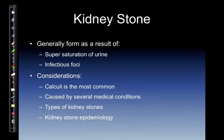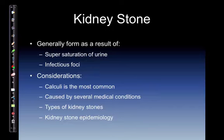Considerations: calculi is the most common. Calcium stone, made of either calcium oxalate or calcium phosphate, caused by several medical conditions. Chronic inflammatory bowel syndromes can cause this. Intestinal bypass surgery can cause this. Factors favoring kidney stone formation include diets high in salt and protein and low citrate levels.